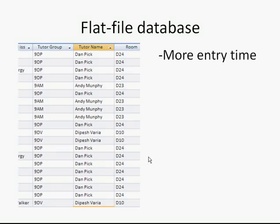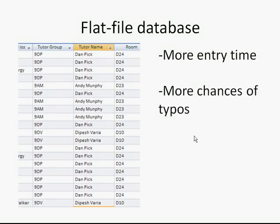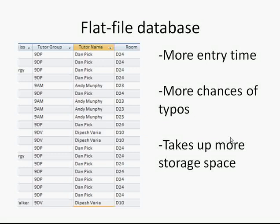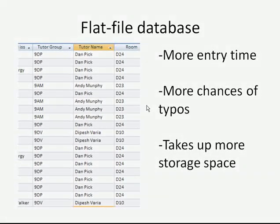This leads to more data entry time — instead of just entering 9DP, we have to enter the teacher's name and room as well. There are more chances of typing mistakes, and it takes up more storage space. With 20 records it might not matter, but with hundreds of thousands, millions, or billions of records, it certainly makes a big difference.